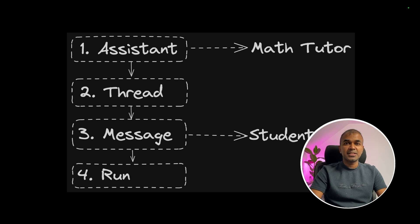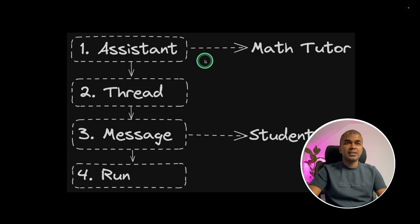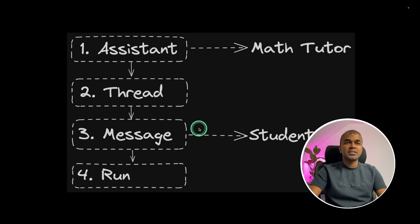To create an Assistants API in Node.js, these are the steps: first, you create an assistant; next, you create a thread; next, you create a message; and then you run it.